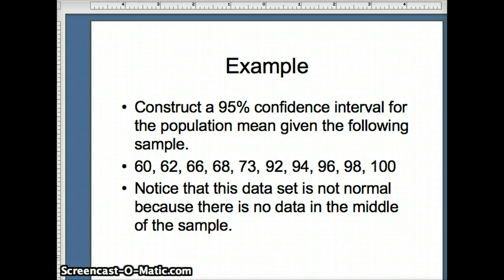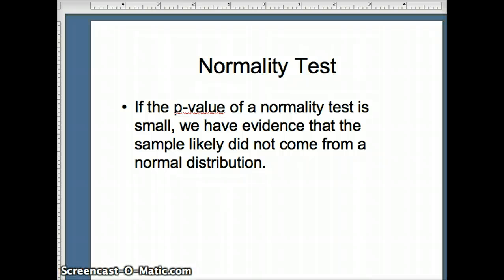But before we do that, we're going to also show one more way to demonstrate that the distribution is not normal. Namely, we're going to use a normality test. And the way the normality test is going to work, if the p-value, something we'll discuss later, of a normality test is small, we have evidence that the sample did not come from a normal distribution. So we're going to go to Minitab and set up our normality test.